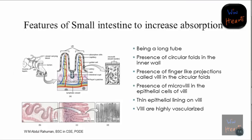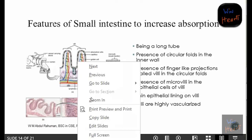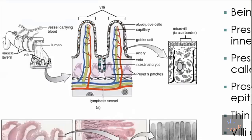So the small intestine has a very very large surface area, which makes it easy to absorb. The epithelial lining is very thin, so we can easily absorb into both the blood system and the lymphatic system. This is what we call highly vascularized - you can see the different vessels: arteries, veins, and the lymphatic system. It is very highly efficient for absorption to take place.